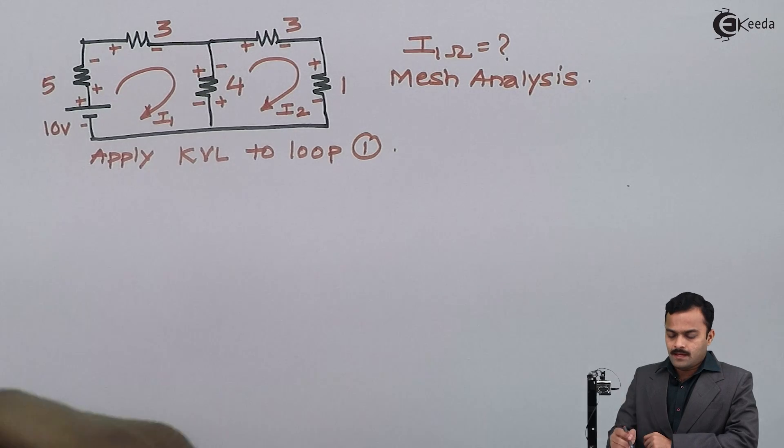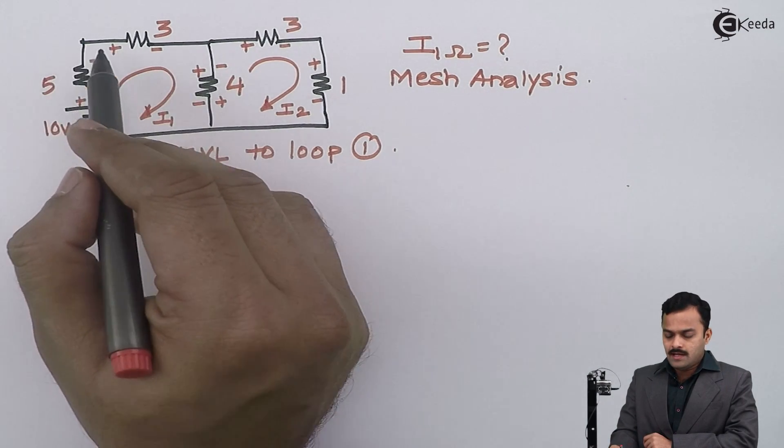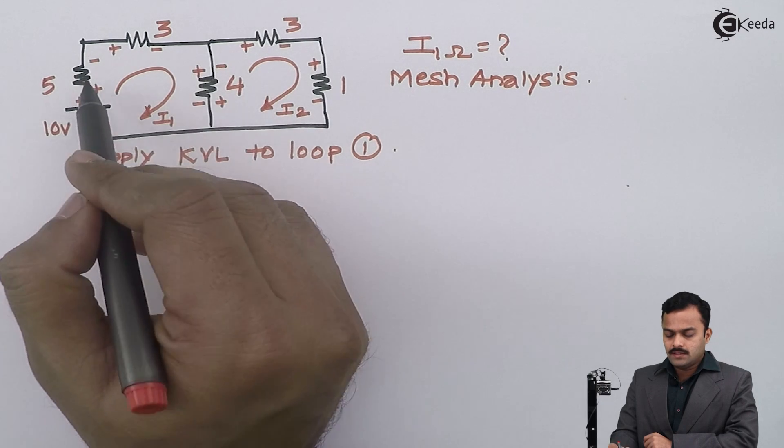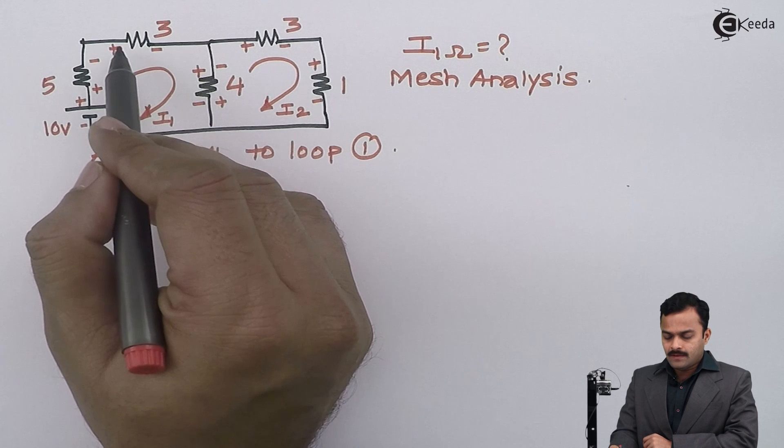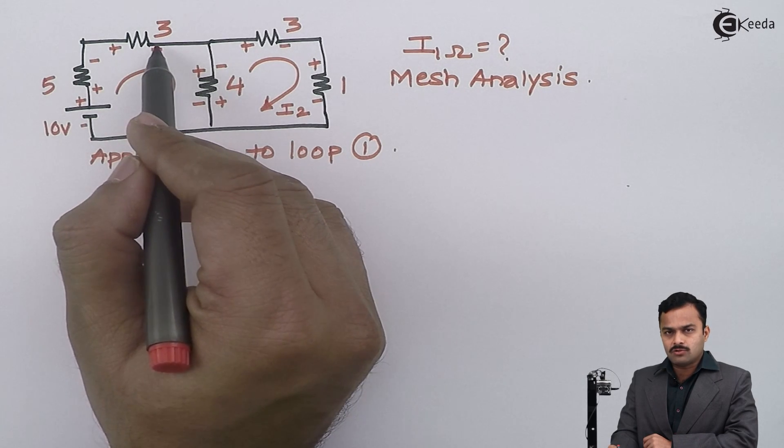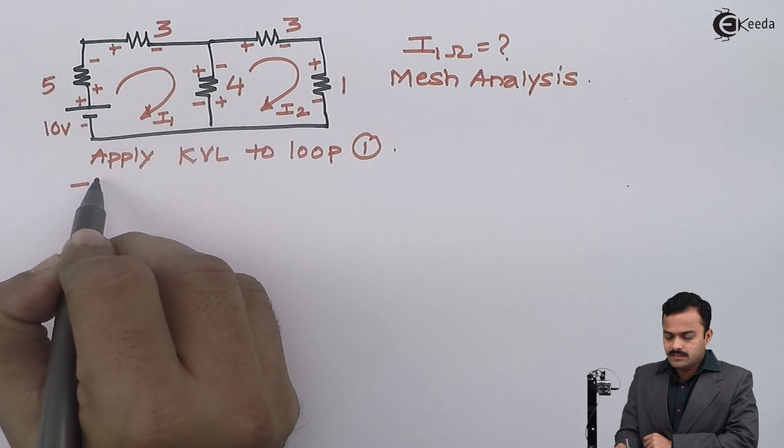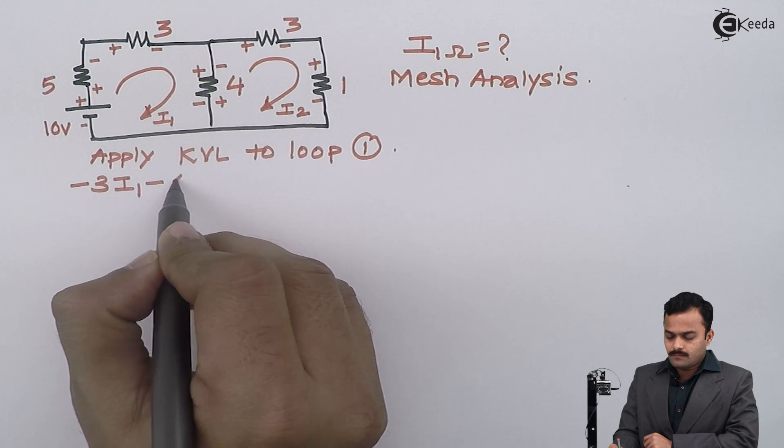To loop 1, I will start from this point and will come back to the same point after tracing this path in a direction of current only. So in a direction of current I am having first voltage drop that is plus minus voltage got developed, so I will mention it minus 3 I1. Similarly for this 4 ohm minus 4 I1.